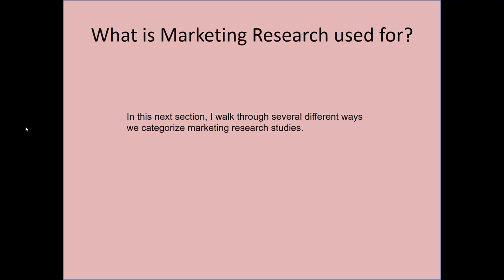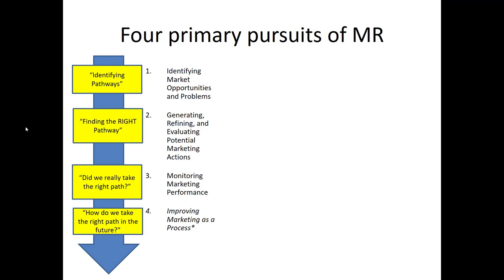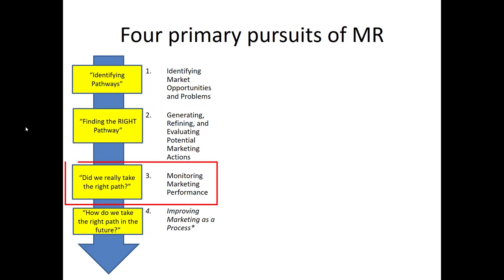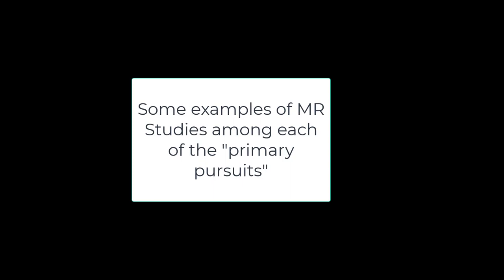Based on the previous definition, it should be apparent that marketing research can be used for anything that might confront a marketer. However, it can be useful to organize marketing research applications in systematic ways. One way is to consider the four primary pursuits — the types of problems marketing research often tries to solve: first, identifying market opportunities and problems; second, generating, refining, and evaluating potential marketing actions; third, monitoring marketing performance; and fourth, improving marketing as a process in itself.